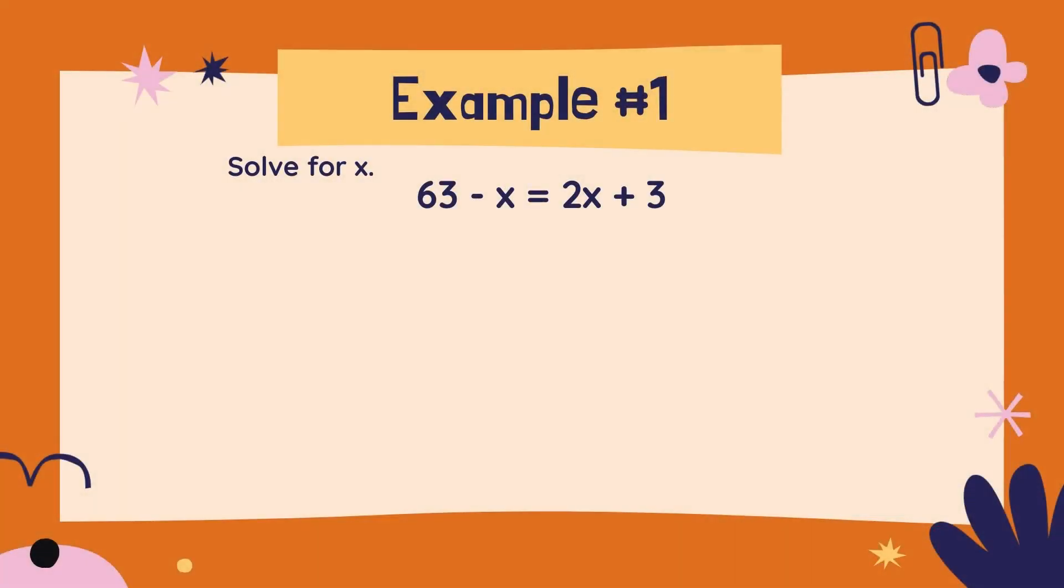Let's jump right in with the first example. Solve for x: 63 minus x equals 2x plus 3. The first step we're going to take is to add 1x to both sides of this equation.